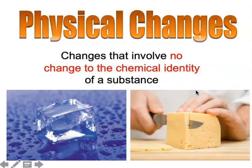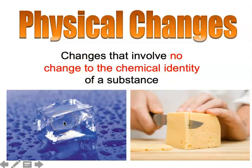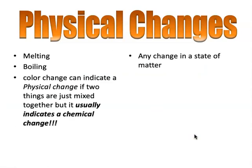Associated with physical properties, you can also have a physical change. With physical changes, there is no change in the chemical identity of a substance. A great example is melting ice — when we talk about phases in day two, you'll see much more on this. Other examples of physical change include dissolving one substance in another, and cutting something like cheese.